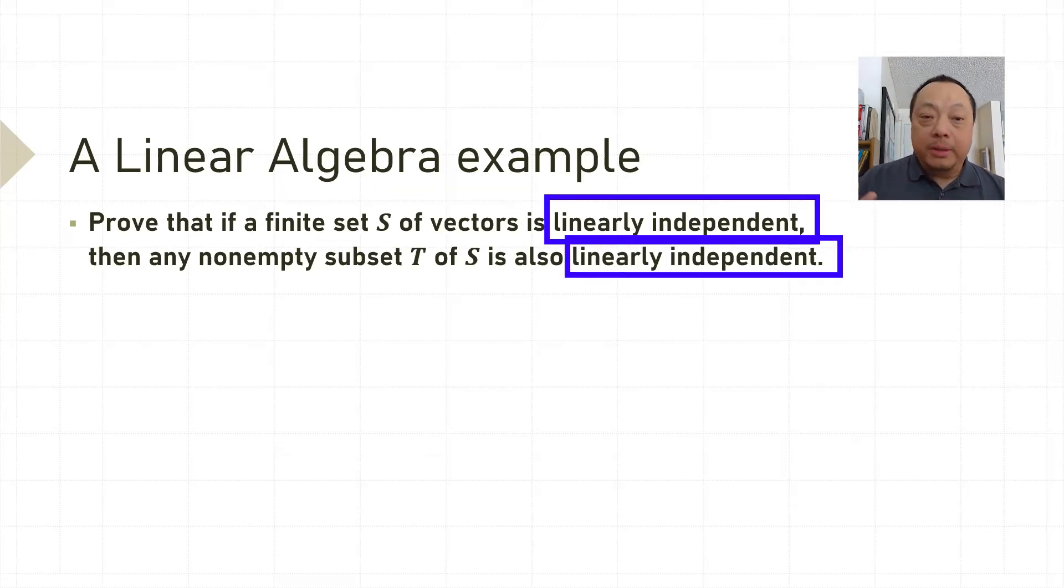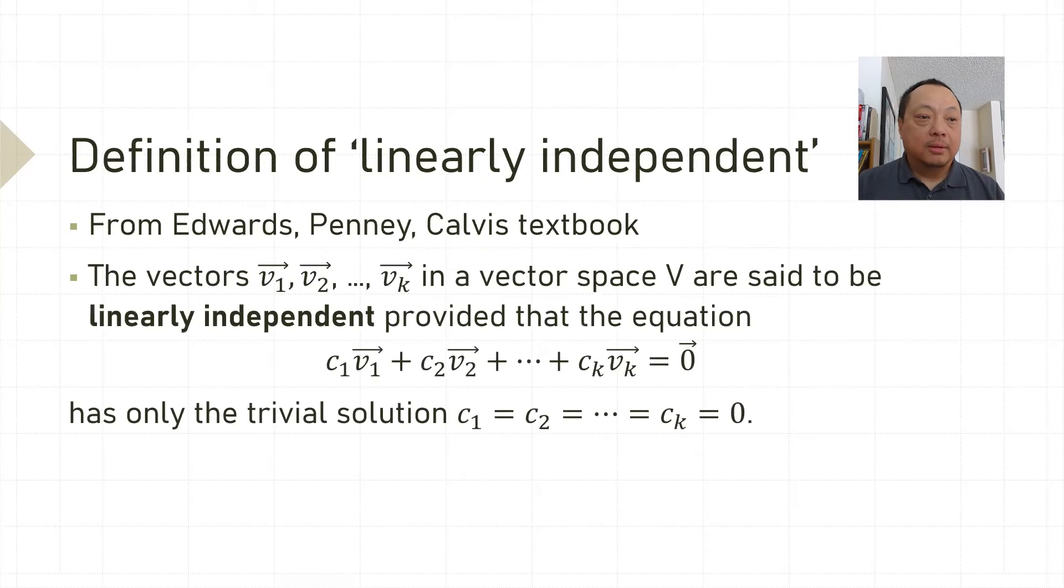This problem includes the technical term linearly independent, so it's a good idea to look at this definition. From the textbook by Edward Penney and Calvis, the vectors v1, v2 to vk in a vector space V are said to be linearly independent, provided that the equation c1*v1 + c2*v2 + ... + ck*vk = 0 vector, where the c's are scalar coefficients.